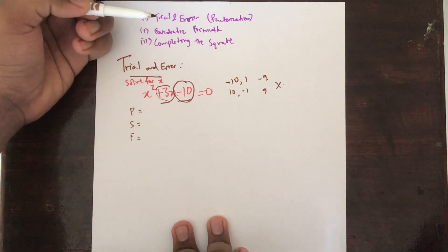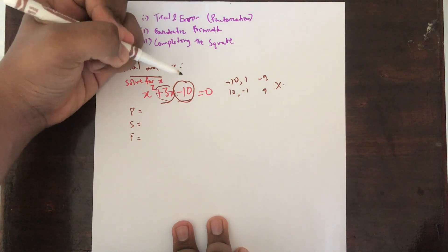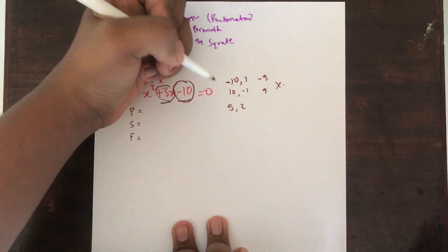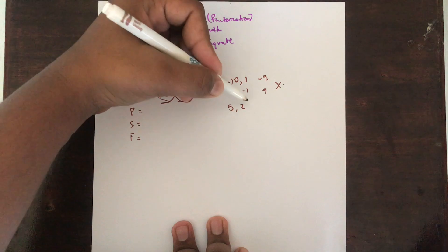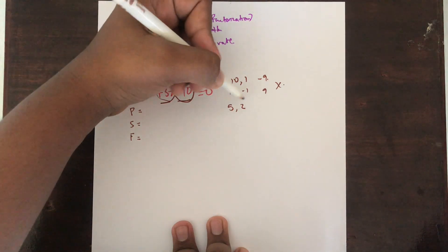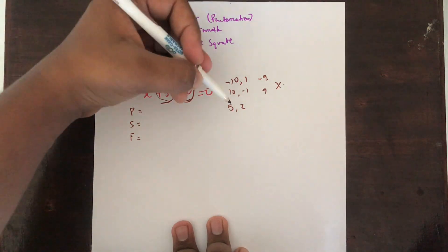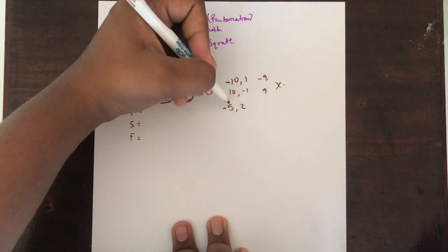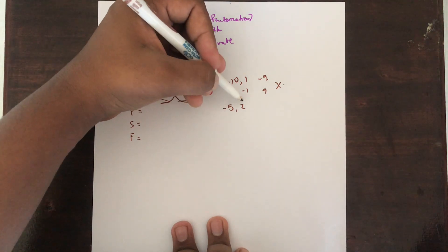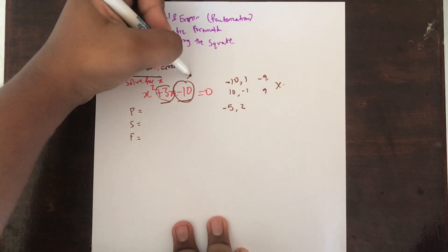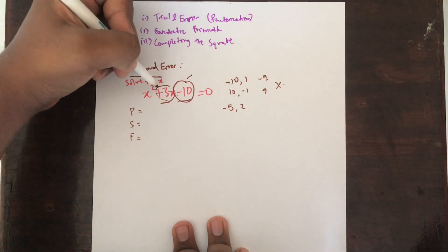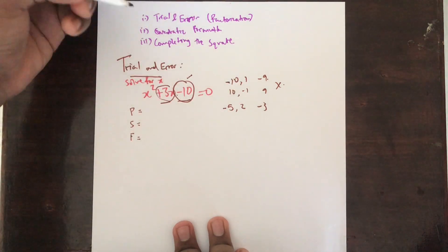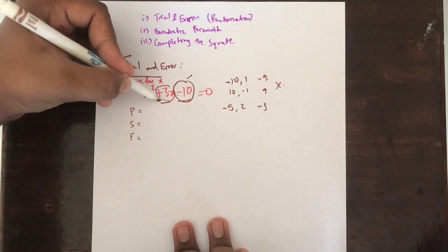Another factor of 10 is 5, so let's try 5 and 2. 5 times 2 gives you 10, but you are looking for minus 10. Suppose you have minus 5 and 2 — minus 5 times 2 gives minus 10, which is what we're looking for. But minus 5 plus 2 gives minus 3, and you are looking for plus 3.